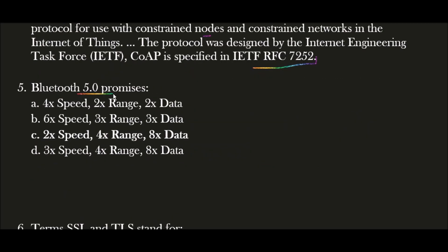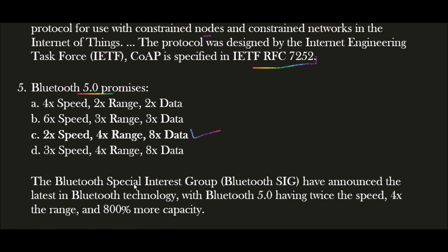Next question: Bluetooth 5.0 promises? The correct answer is option C. According to Bluetooth version 5.0, it promises 2x speed, 4x range, and 8x data capacity. The Bluetooth Special Interest Group (Bluetooth SIG) announced the latest Bluetooth technology with Bluetooth 5.0 having 2x speed, 4x range, and 800% more capacity of data.